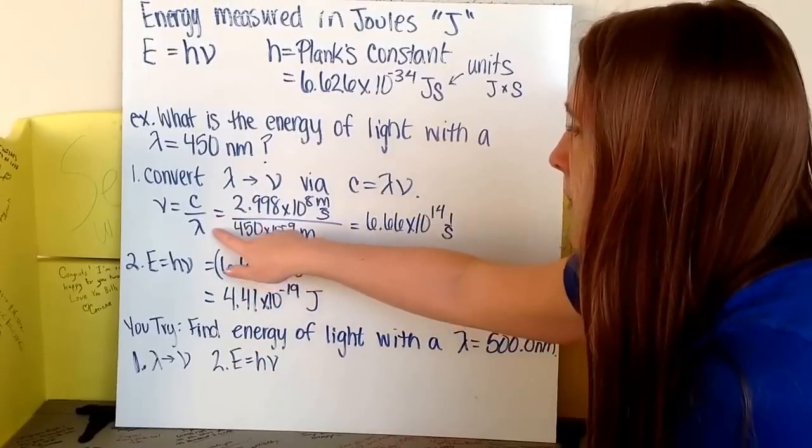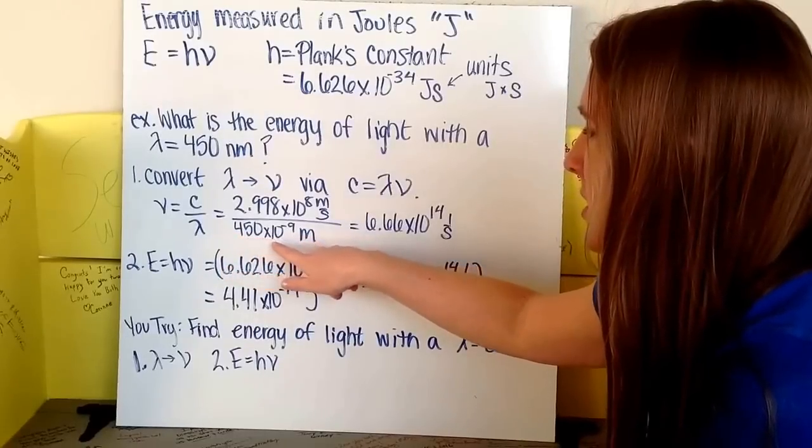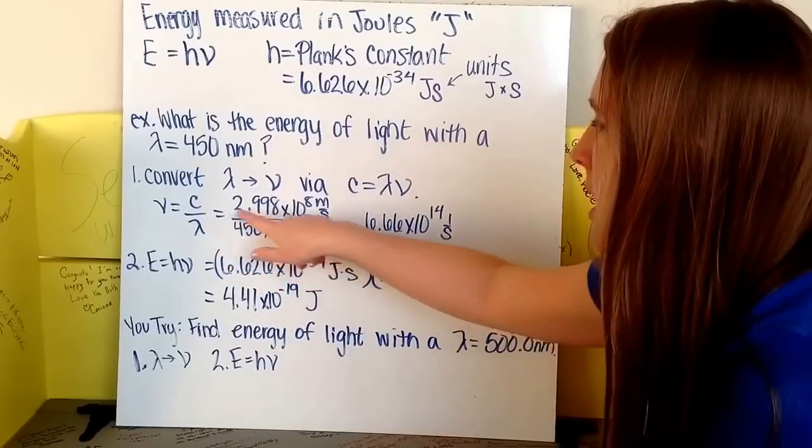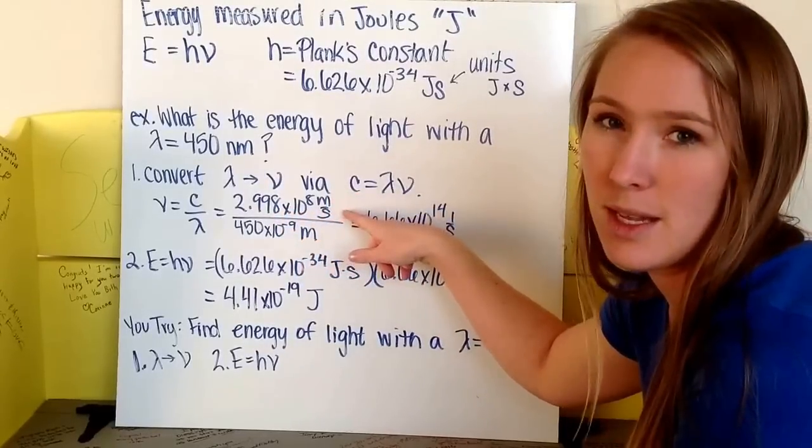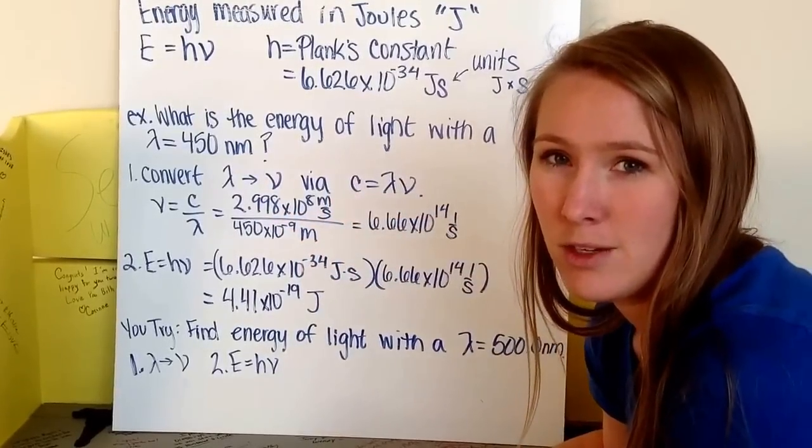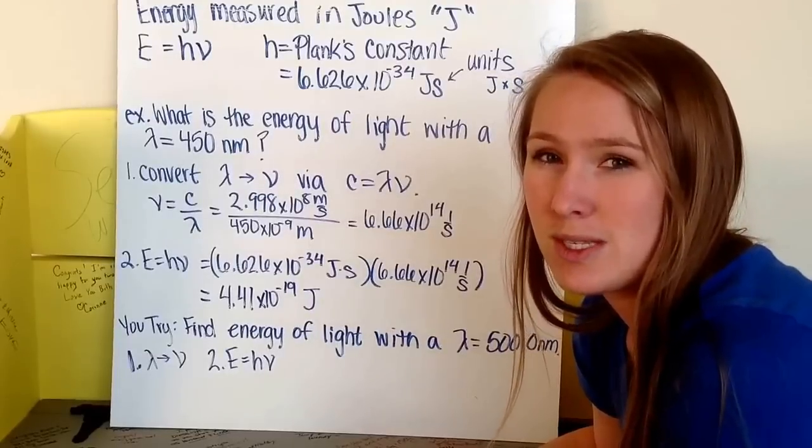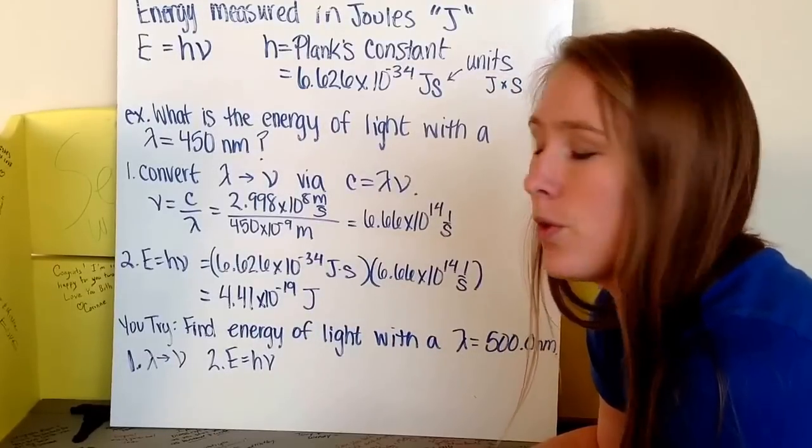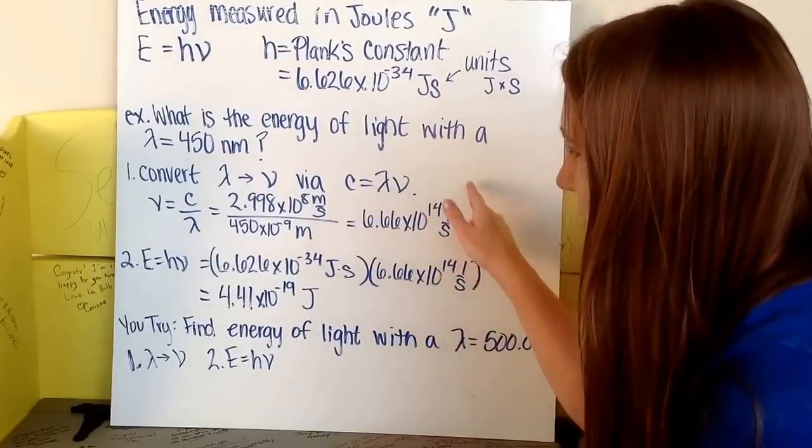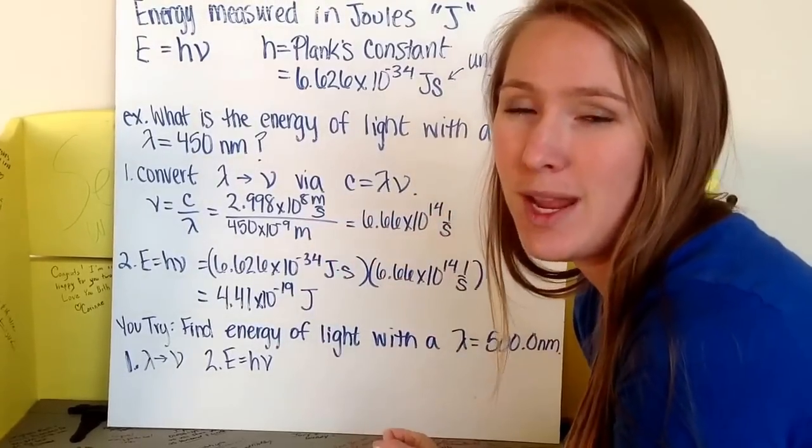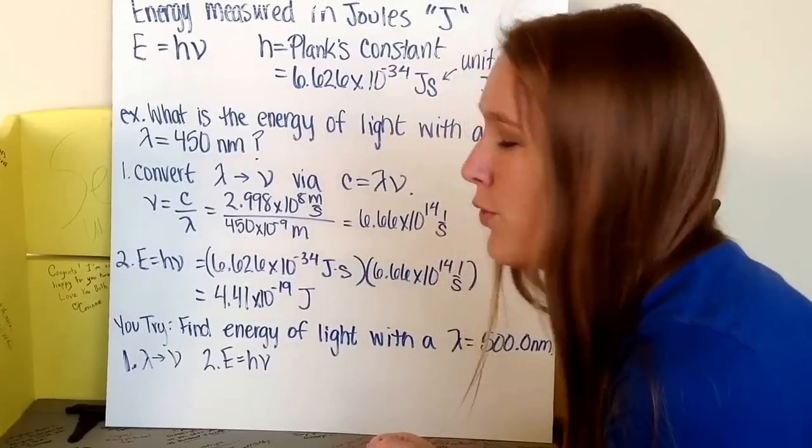My wavelength is 450 times 10 to the negative 9th meters, and my speed of light is 2.998 times 10 to the 8th meters per second. When I plug this in my calculator, just like before, I get 6.66 times 10 to the 14th inverse seconds. Now I have my frequency, and I can plug it into my energy equation to solve for energy.